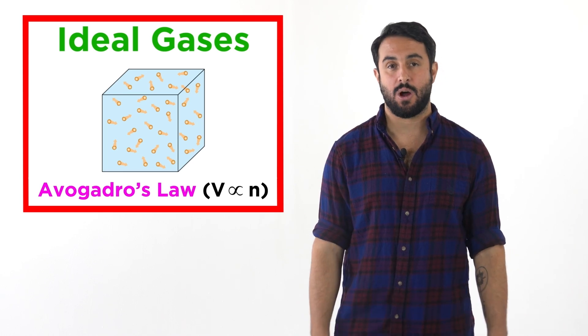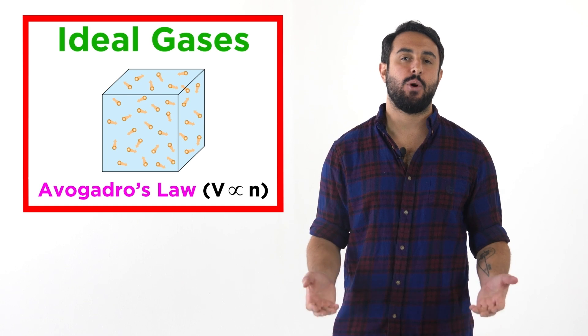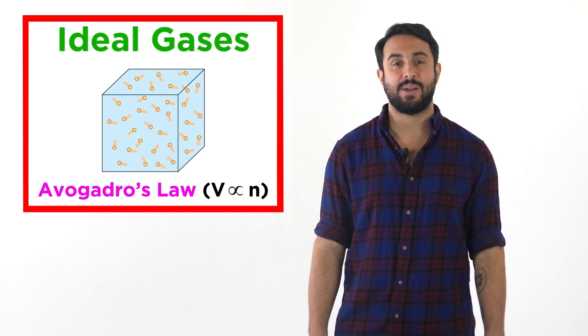Including Avogadro's law, or V1 over N1 equals V2 over N2, meaning that volume and moles are proportional at constant temperature and pressure.